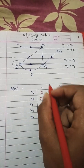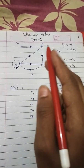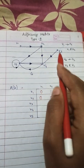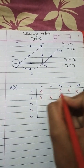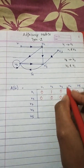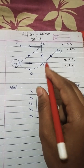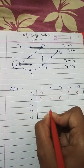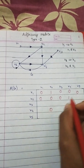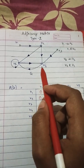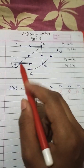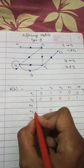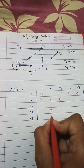V2 related to V2? No circular, therefore 0. V2 related to V3? No relation at all, 0. V2 related to V4? Yes, so 1. But V4 is not related to V2, therefore 0. V2 related to V5? Yes, so 1. But V5 is not related to V2, therefore 0.